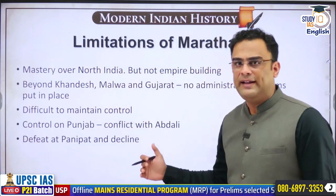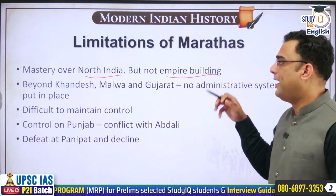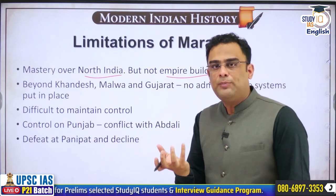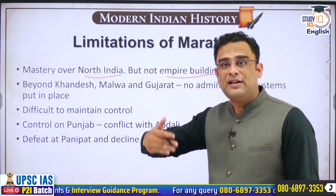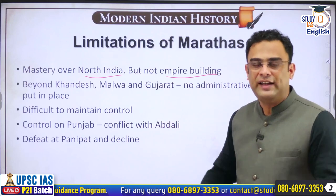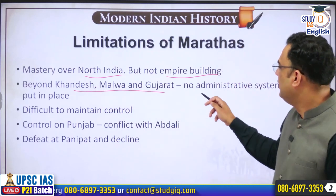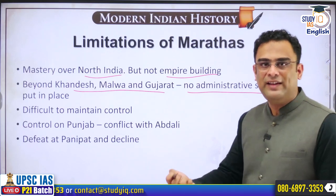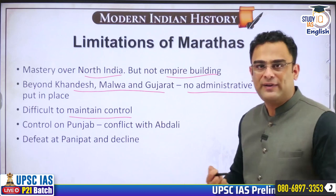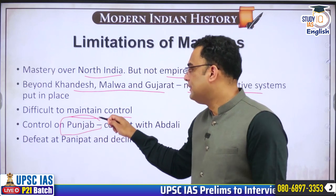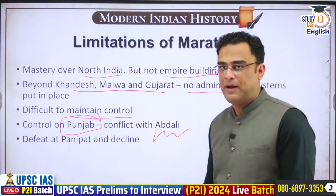The limitations of Marathas during the 18th century up to this point: they had complete mastery over North India, but their style was not of empire building — it was more about extending control, not providing the consolidated administration that empire building would require. Beyond Khandesh, Malwa and Gujarat, there were no administrative systems put in place; it was mostly extraction of tributes, and local chiefs always tried to rebel whenever they found an opportunity. Control of Punjab through the 1752 agreement brought them into conflict with the rising Afghan power of Ahmed Shah Abdali.